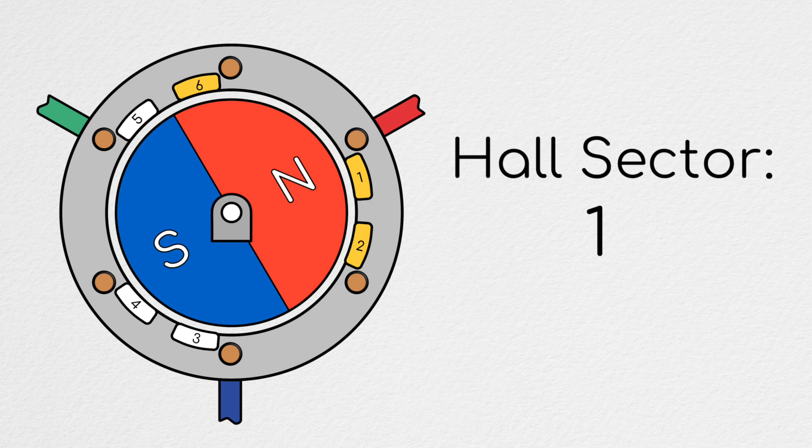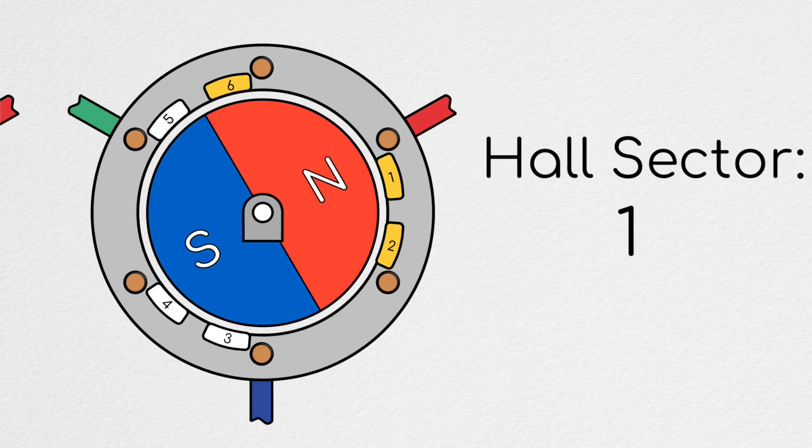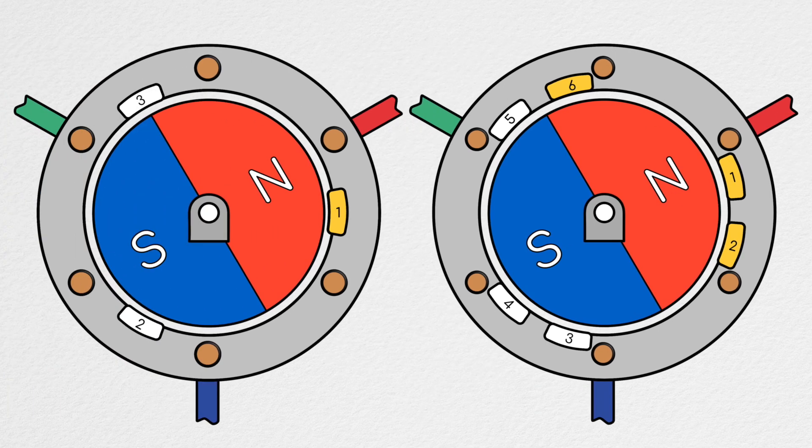How would we modify our approach to block commutation for this theoretical 12-sector motor to get better performance? Well, let's start by looking at this segment here, where the rotor is turned such that it is aligned with what would have been the transition point between hall sectors 0 and 1.